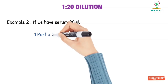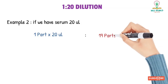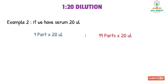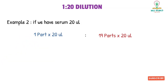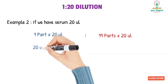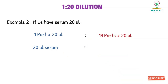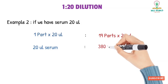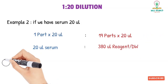In a second example, if our serum quantity is 20 microliters, then the same formula applies: one part multiplied by 20 gives 20 microliters of sample, and 19 parts multiplied by 20 gives 380 microliters of reagent or distilled water — whatever solution we are using to dilute the sample.